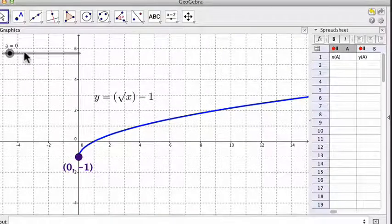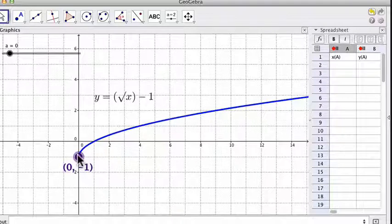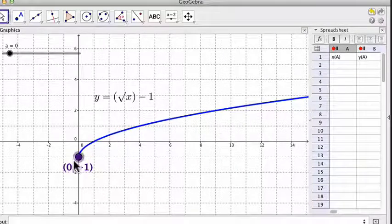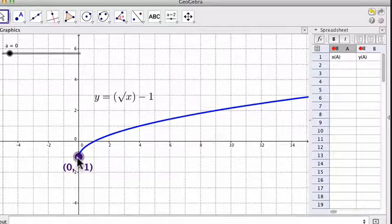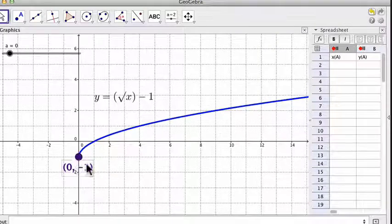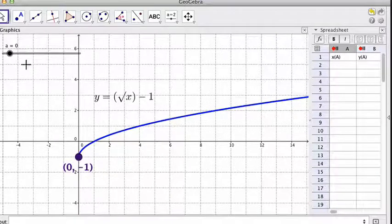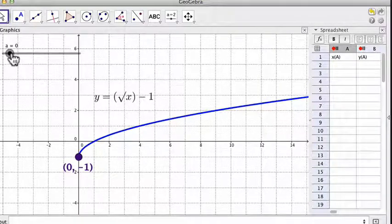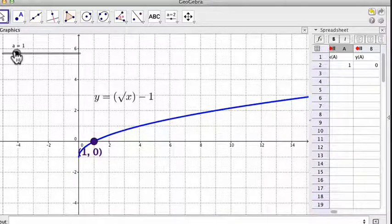This slider over here will move the purple point, or trace the purple point, along the blue function. Notice it does end right here, it ends right here as well. And we'll talk about why in a moment, but I want you to see how this purple point traces along the blue function. So I drag it.